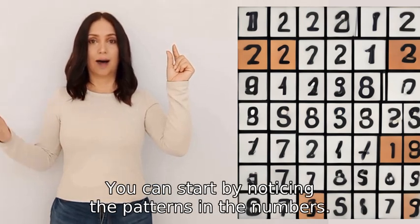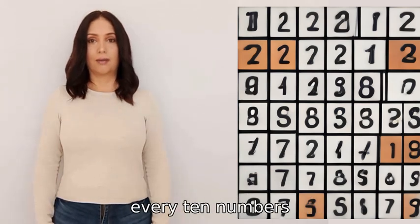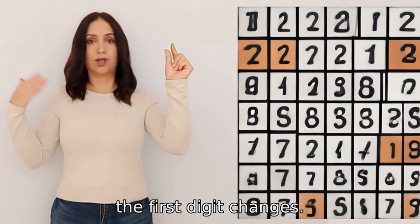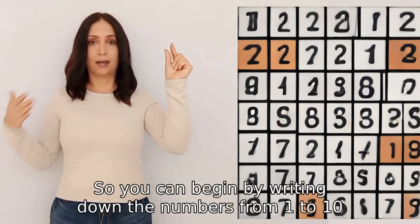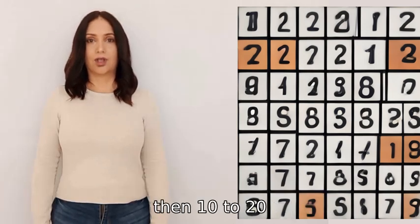You can start by noticing the patterns in the numbers. For example, every ten numbers the last digit changes, and every hundred numbers the first digit changes. So you can begin by writing down the numbers from one to ten, then ten to twenty, and so on.